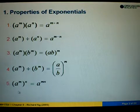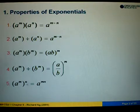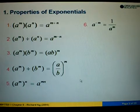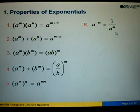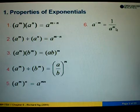In formula number 5, if we are given a to the power m, and then that bracket to the power n, then power and power we multiply, so we get a to the power mn. Formula number 6: if the power is negative, we invert it to become positive, giving us 1 over a to the power of m.